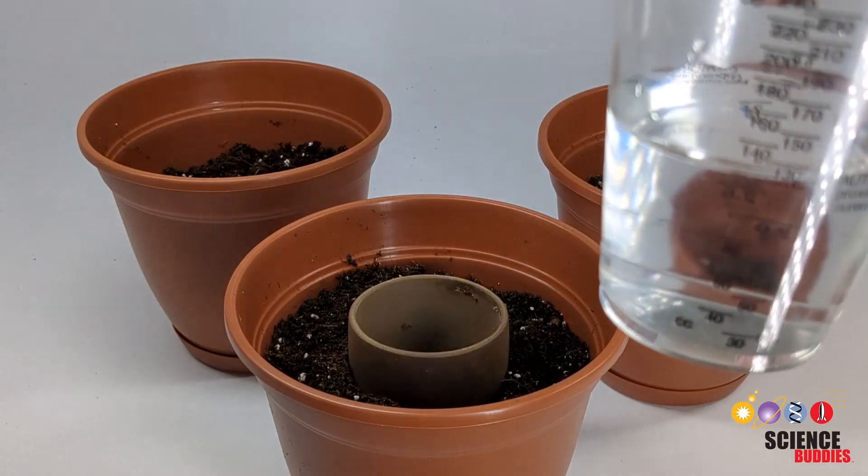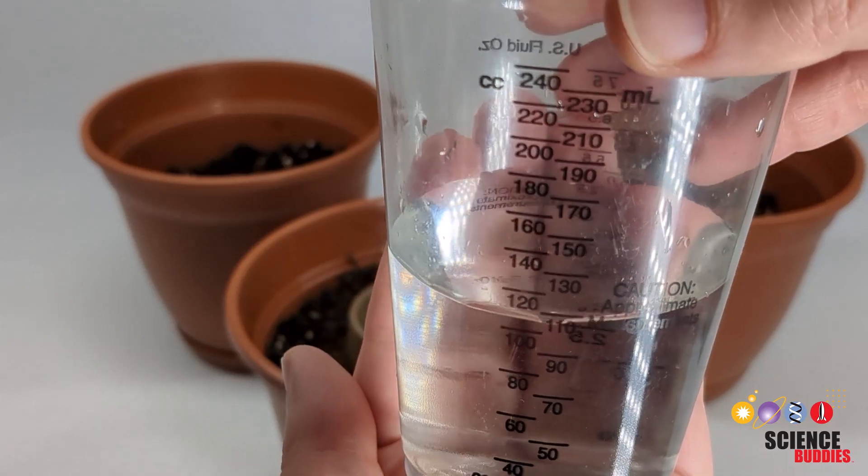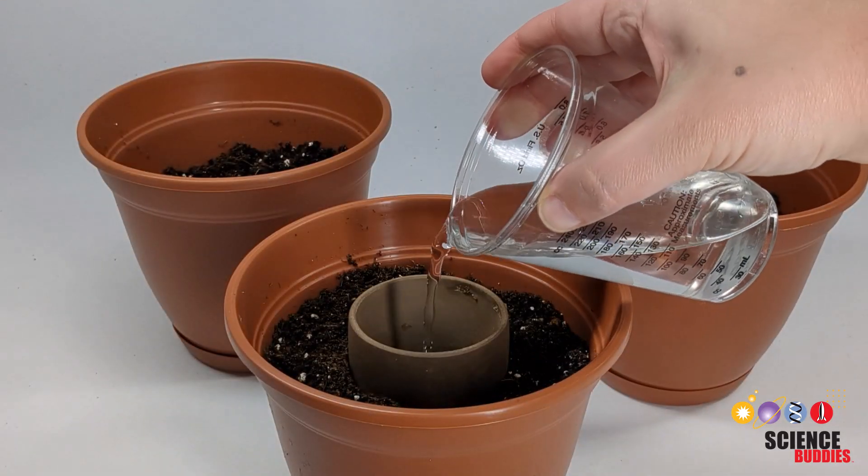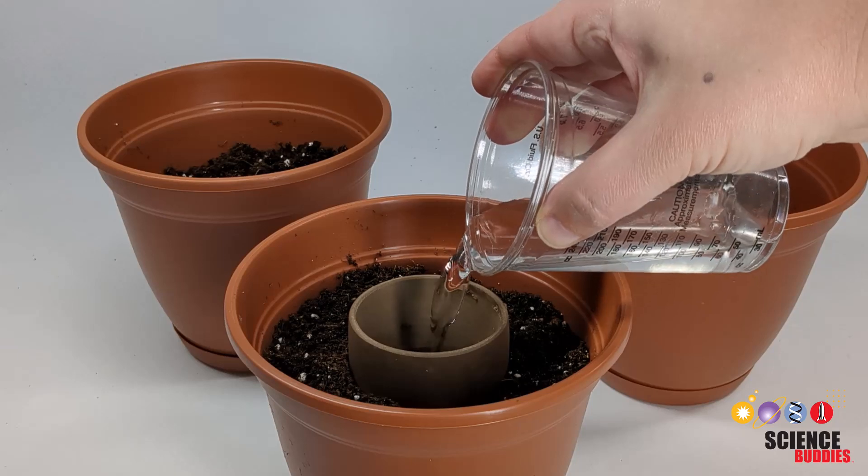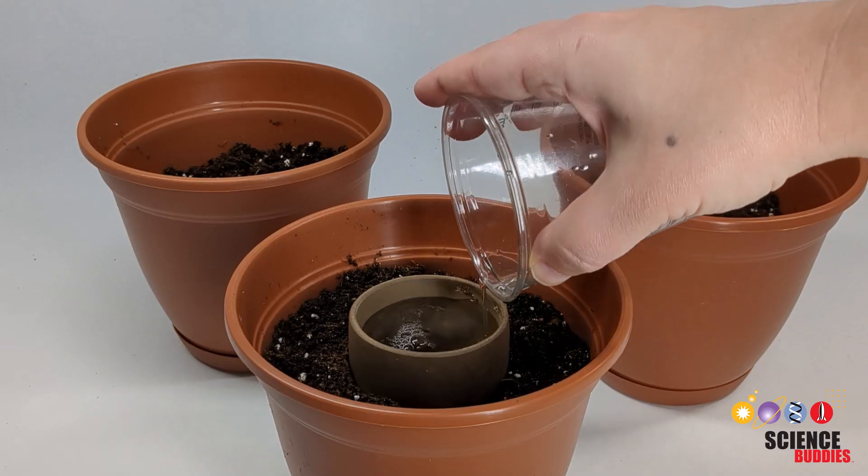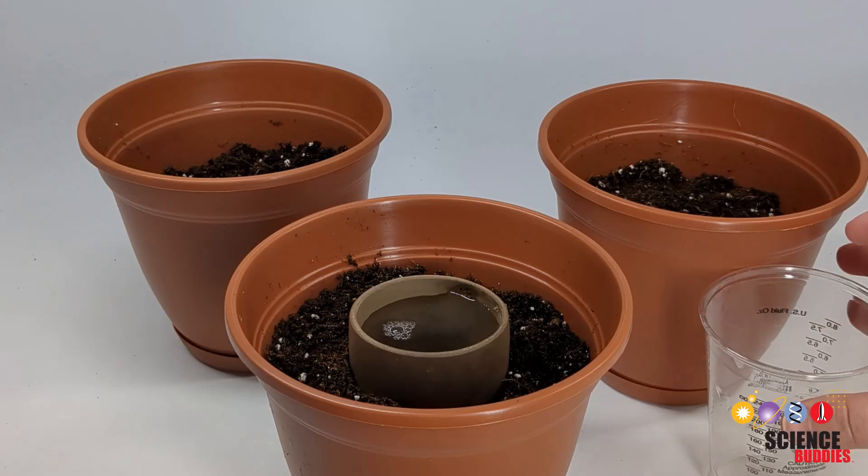Add the same volume of water to each irrigation system based on your calculations of the weekly water dispensed by the drip irrigation system. For example, add the same volume of water to the inside of the oya once a week.